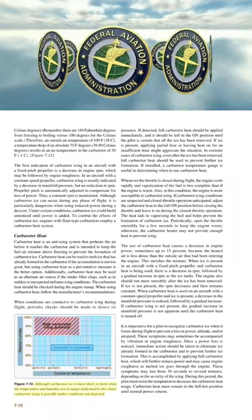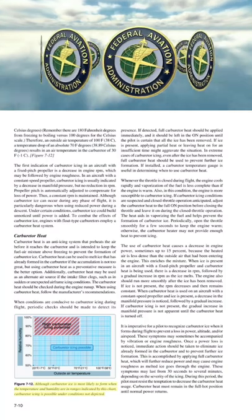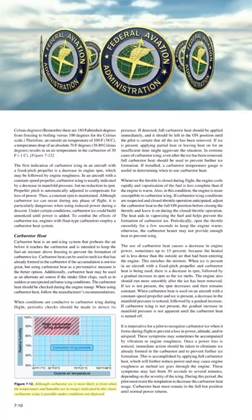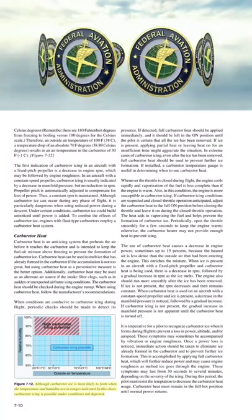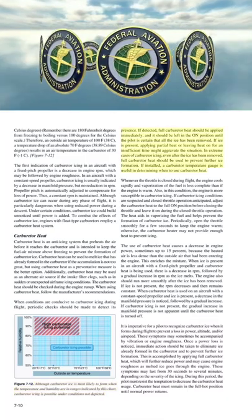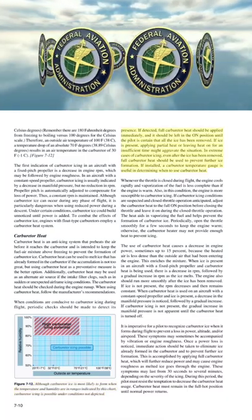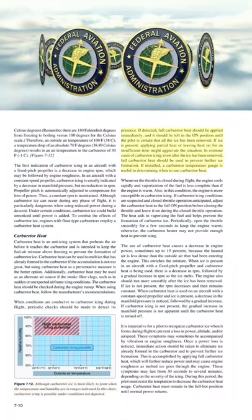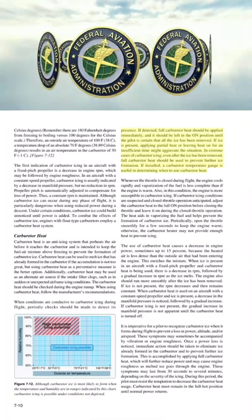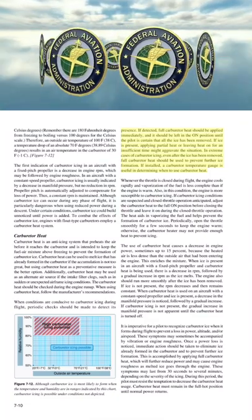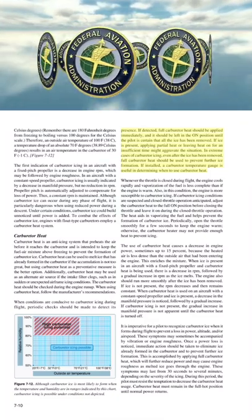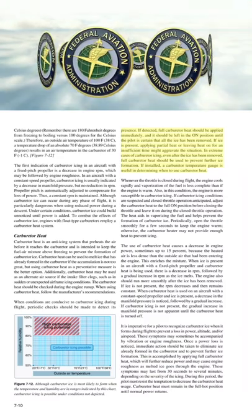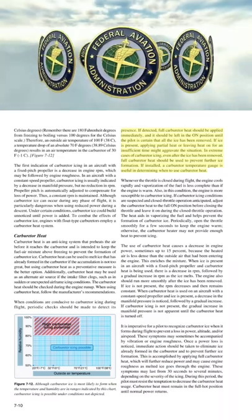Although carburetor ice is most likely to form when the temperature and humidity are in ranges indicated on the carburetor icing chart, carburetor icing is possible under conditions not depicted. If detected, full carburetor heat should be applied immediately and left in the on position until the pilot is certain that all the ice has been removed.